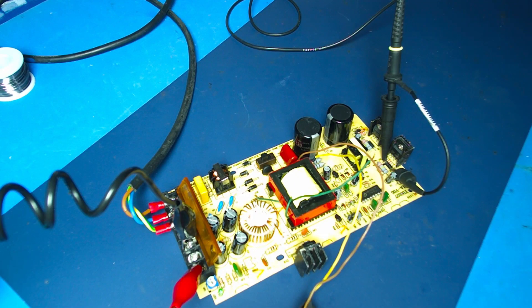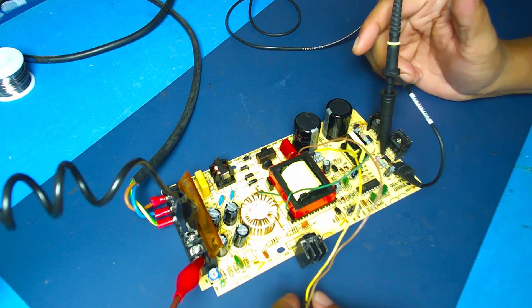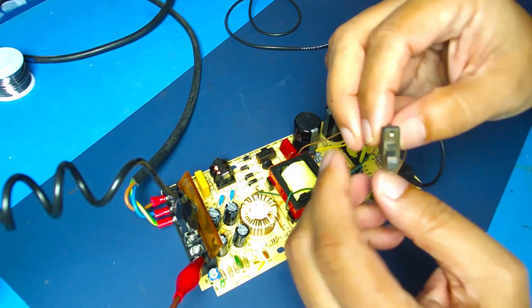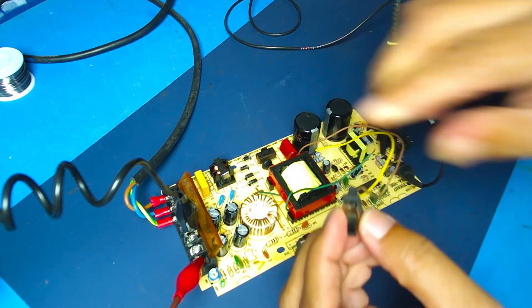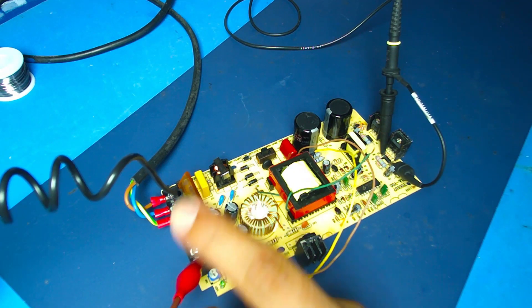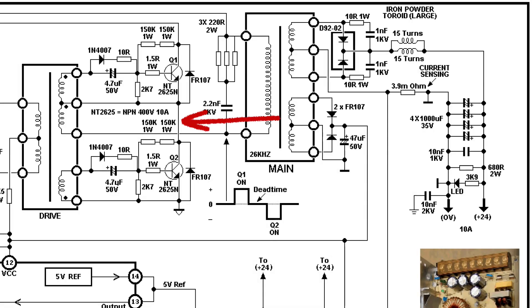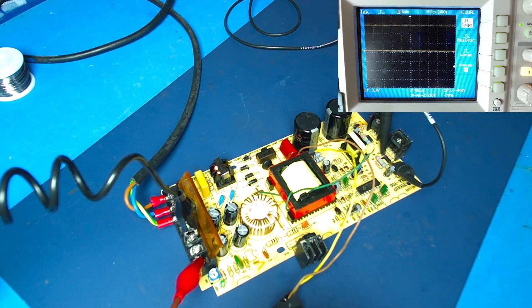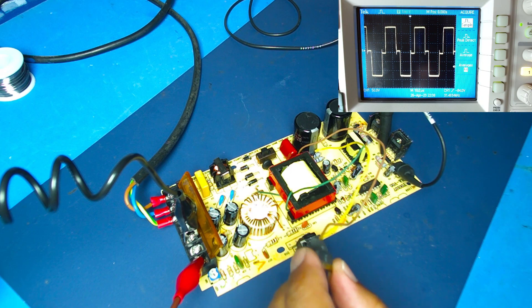Now we have to switch to a forward converter with RC snubber circuit and switch to a constant 3 Ampere load and oscilloscope probe to a common point. Now we will try to switch on the SMPS. We will use a clean collector voltage pattern and a high-level voltage pattern.